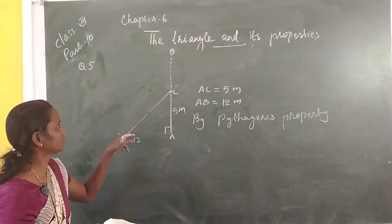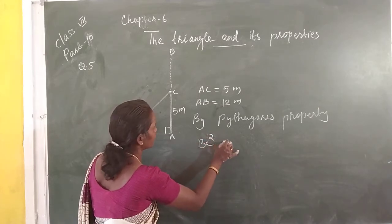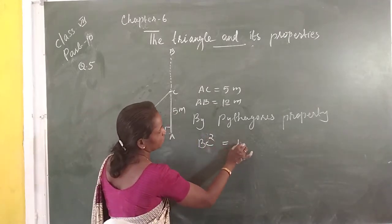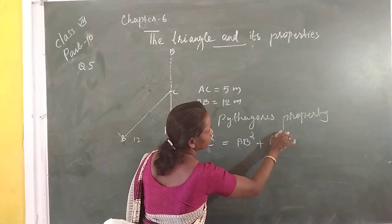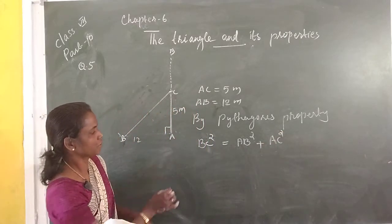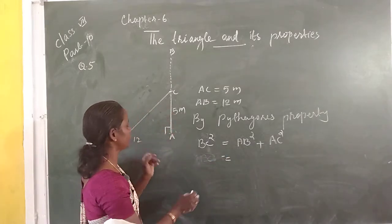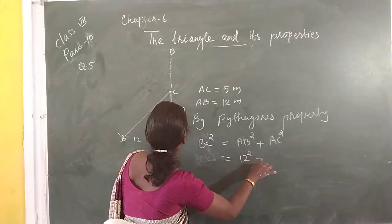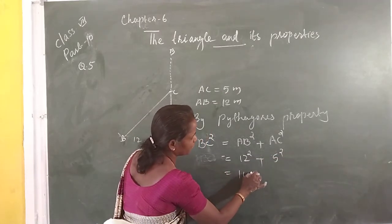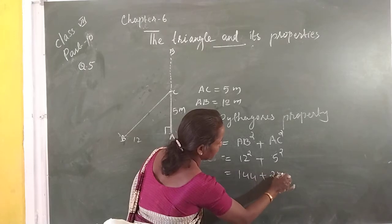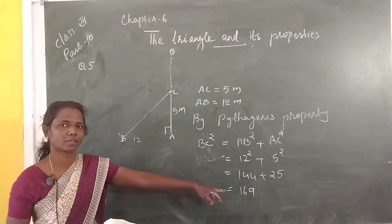By Pythagoras property: BC² = AB² + AC². Here, BC² is equal to AB² plus AC². AB is 12 meters and AC is 5 meters. So, BC² = 12² + 5² = 144 + 25 = 169. BC² is equal to 169.